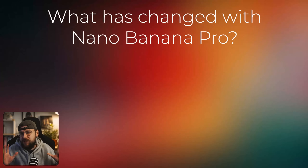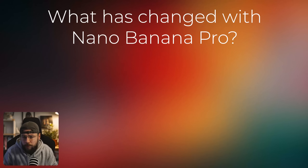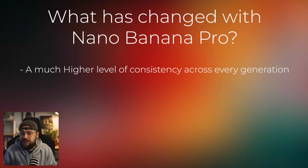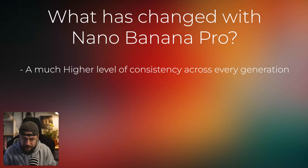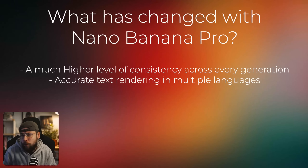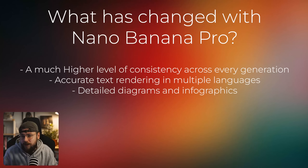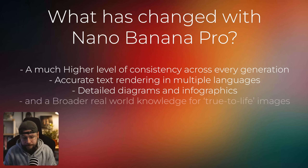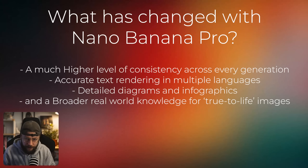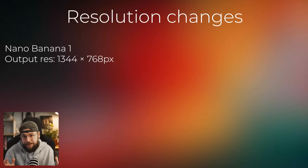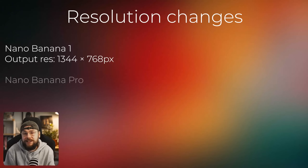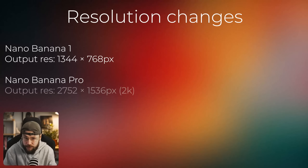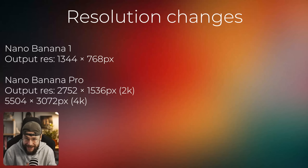So what has actually changed with Nano Banana Pro? Google says the new model focuses on a much higher level of consistency across every generation, accurate text rendering in multiple languages, detailed diagrams and infographics, and a broader real world knowledge for true to life images. And I feel like I have to mention resolution because we can now generate images in both 2 and 4K — so this is a big jump.